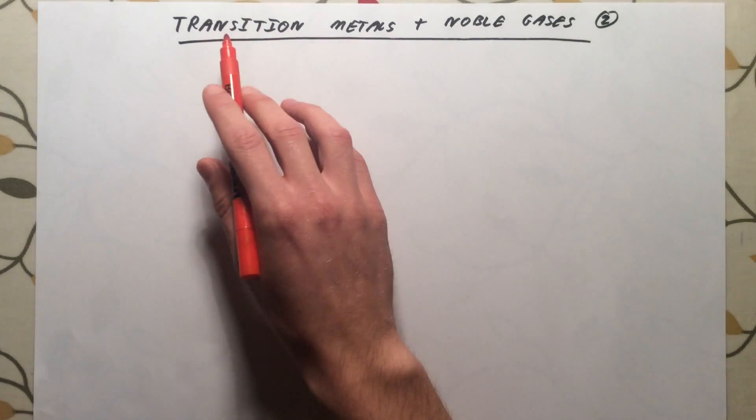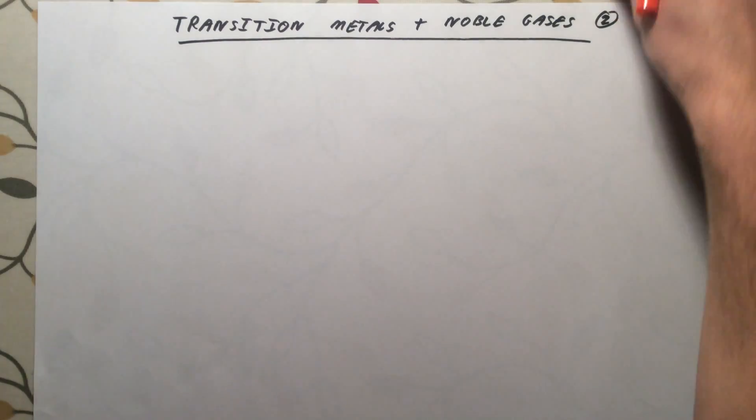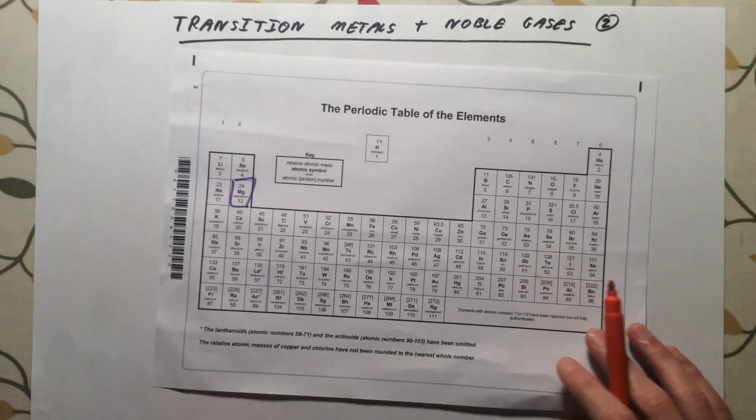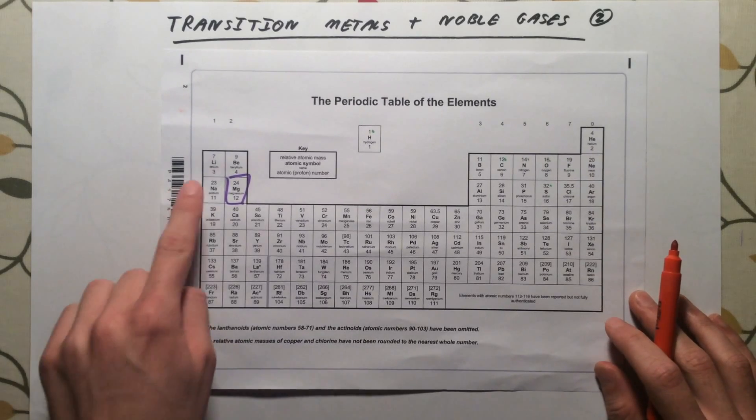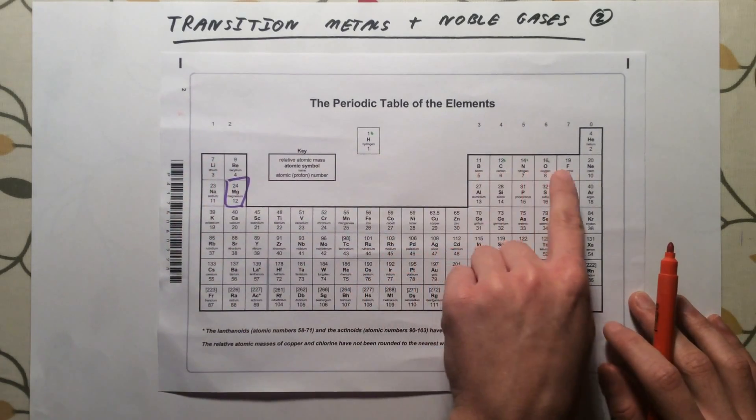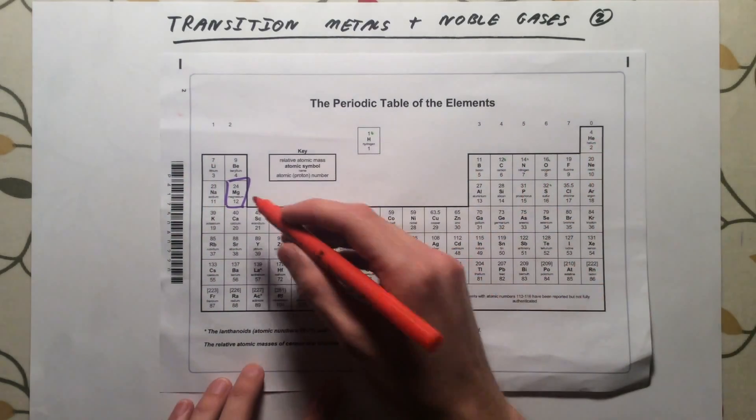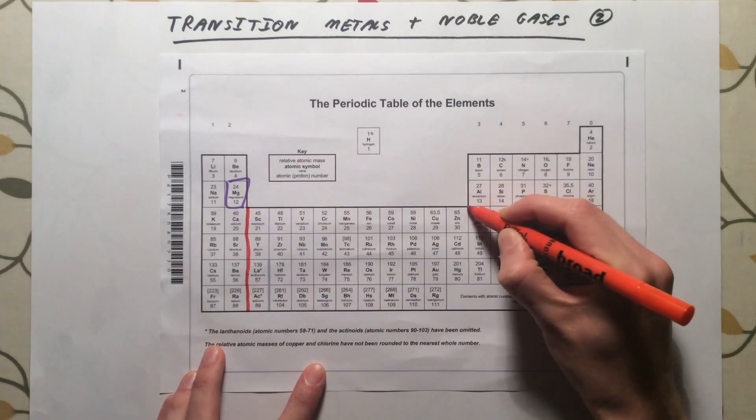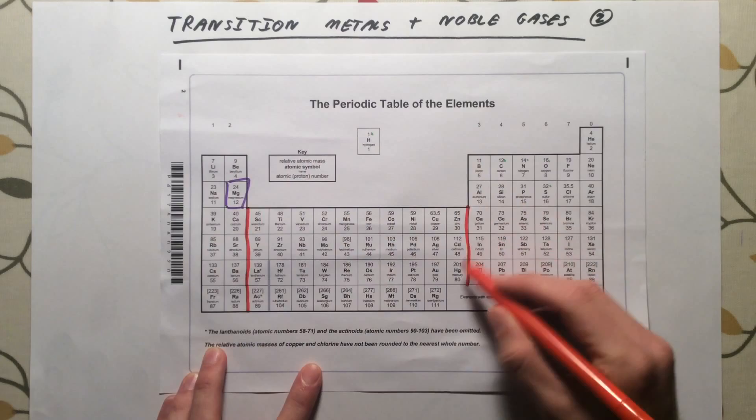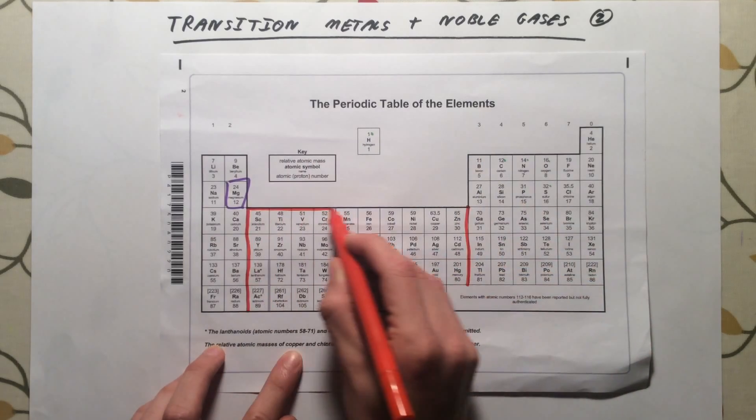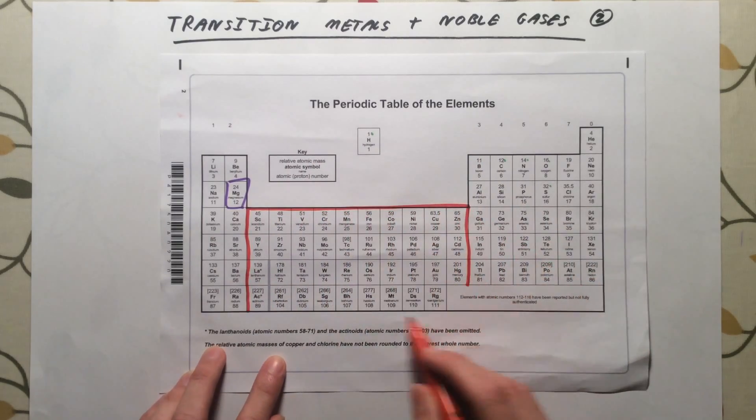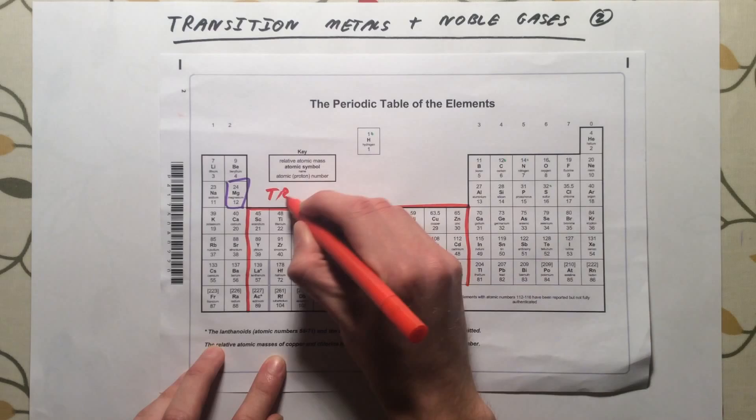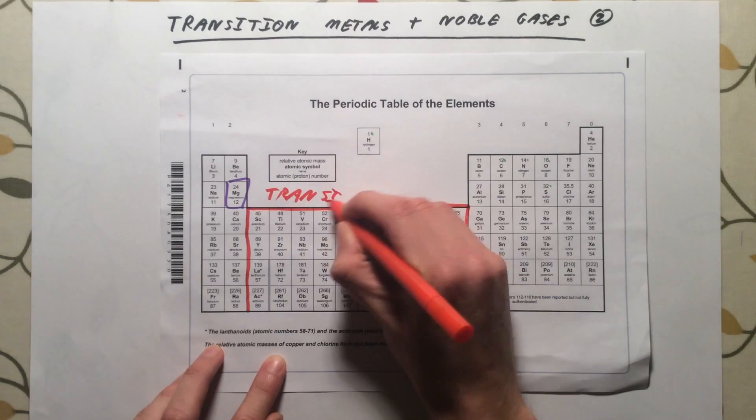The first of these groups is the transition metals. If you look at a periodic table, we know from Topic 1 that we've got Group 1, 2, 3, 4, 5, 6, 7 and 0. The transition metals are actually this very large section of metals that are situated between Group 2 and Group 3. So right in the middle of our periodic table, the majority of metals are actually these transition metals.